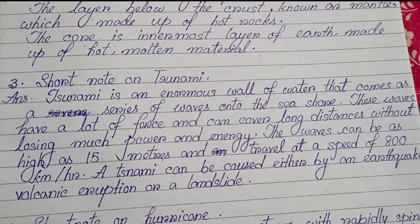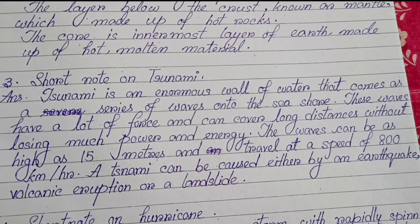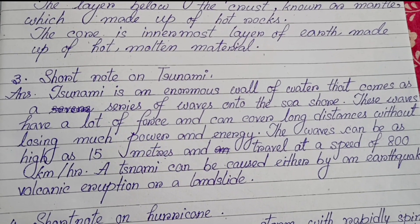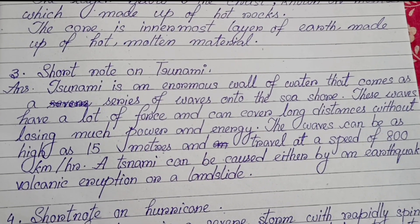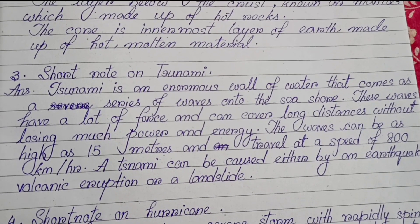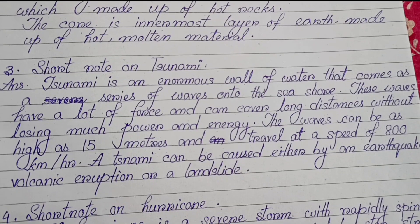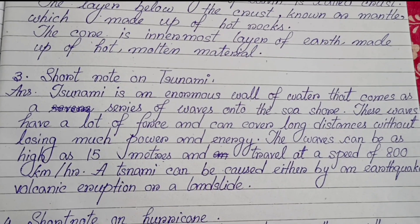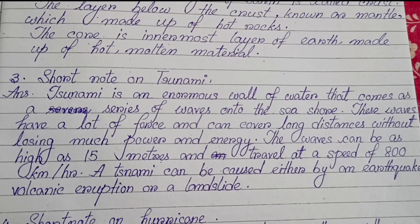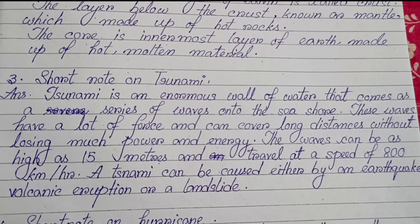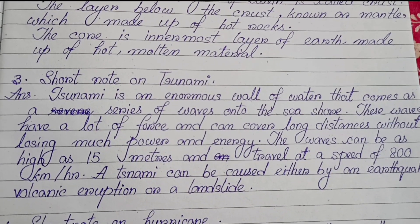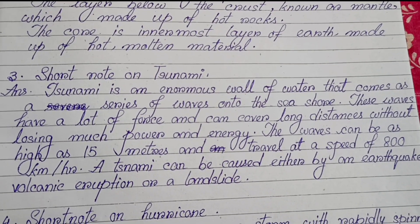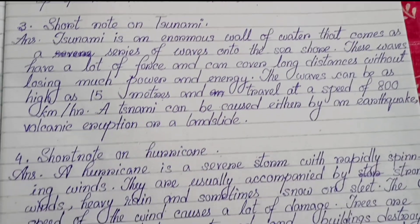Number three: Short note on tsunami. A tsunami is an enormous wall of water that comes as a series of waves onto the seashore. These waves have a lot of force and can cover long distances without losing much power and energy. The waves can be as high as 15 meters and travel at a speed of 800 kilometres per hour. A tsunami can be caused either by an earthquake, volcanic eruption or a landslide.